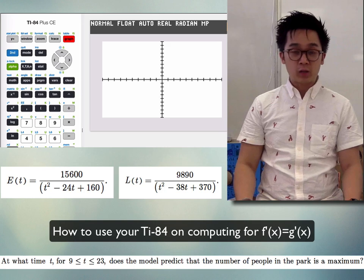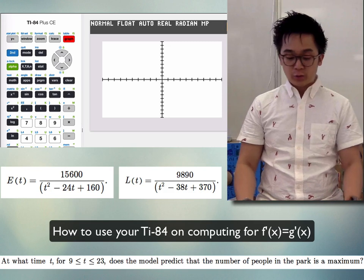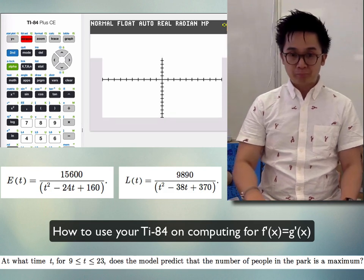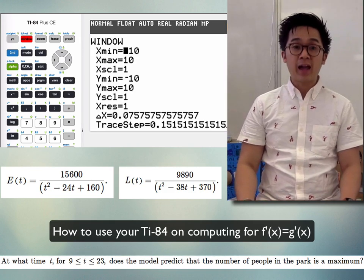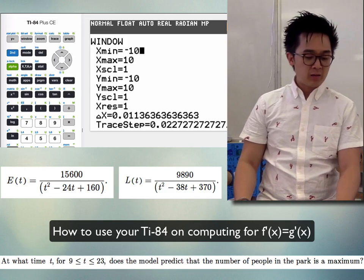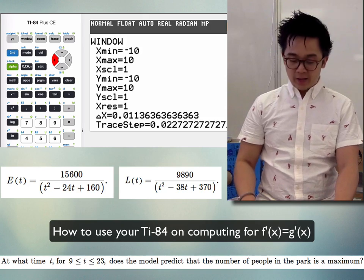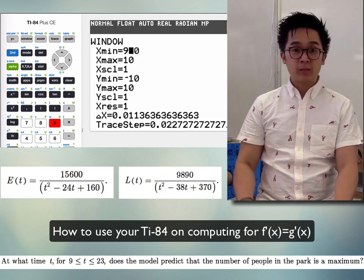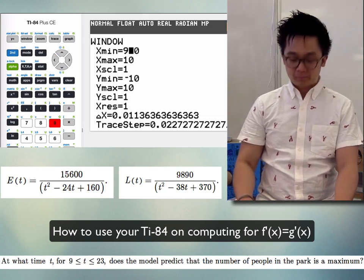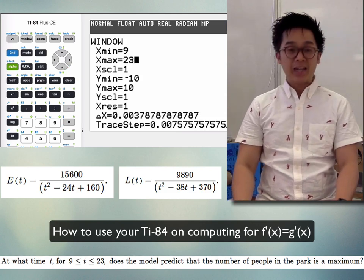We can use the information given in the problem: the interval of t is from 9 to 23. I always go to WINDOW and set X-minimum and X-maximum according to the given interval. So set X-min to 9 and X-max to 23, then hit Graph.